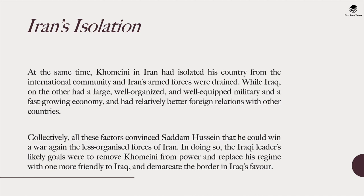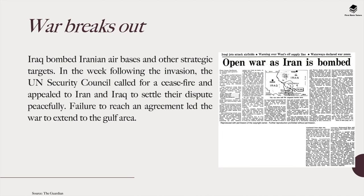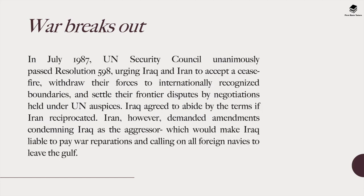The war broke out and Iraq bombed Iranian air bases and other strategic targets. The UN Security Council called for a ceasefire and appealed for peaceful settlement. In July 1987, the UN Security Council unanimously passed Resolution 598, urging Iran and Iraq to accept a ceasefire, withdraw forces to internationally recognized boundaries, and settle frontier disputes by negotiation. Iraq agreed to abide by the terms if Iran reciprocated; however, Iran demanded amendments condemning Iraq as the aggressor, which would make Iraq liable for war reparations, and called for all foreign navies to leave the Gulf.